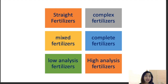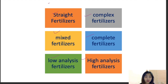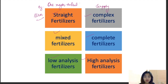These fertilizers can be classified into six categories: straight fertilizers, complex fertilizers, mixed fertilizers, complete fertilizers, low analysis fertilizers, and high analysis fertilizers. Straight fertilizers supply only one major nutrient — for example, urea. Complex fertilizers supply two or more than two major nutrients — an example would be DAP.